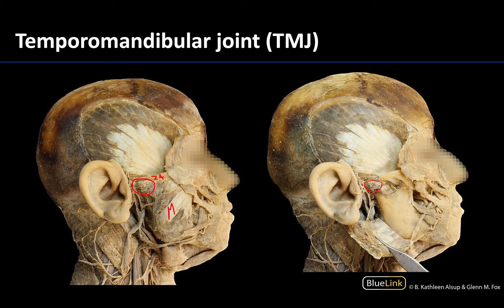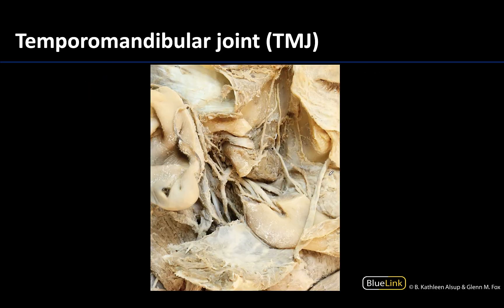What you're seeing in this region — and you can see it as well with the masseter muscle reflected — are ligaments associated with the joint as well as the articular capsule. You can't see the bony parts because they're covered by the articular capsule, but if that is carefully removed, you can see the mandibular condyle right here.